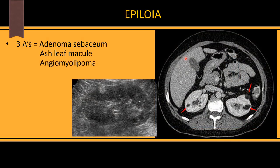The third A is angiomyolipoma. In the kidney, blood vessels, muscles, and fat proliferate. Since it contains fat, it has a negative HU value — hypodense on CT. On ultrasound, it appears as a hyperechoic lesion because fat is hyperechoic.